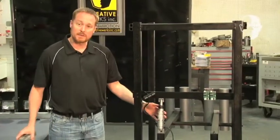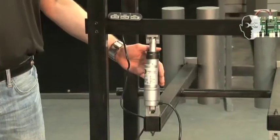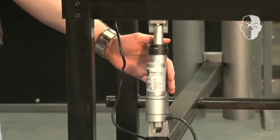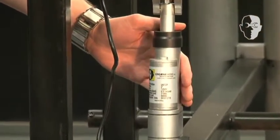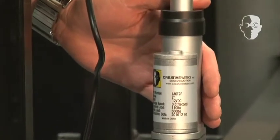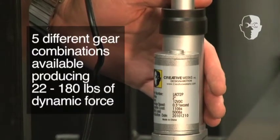This is our 2 inch LACT2P. The unit is operated with an ACME style screw, has a 20 to 1 gear ratio, and can support a dynamic load of up to 110 pounds.